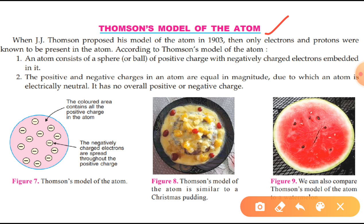According to this model, an atom was considered to be a sphere of uniformly positive charge and electrons are embedded into it like raisins in a plum pudding.